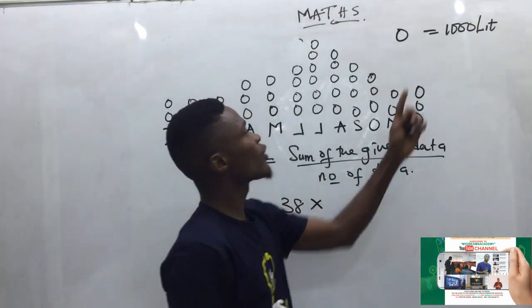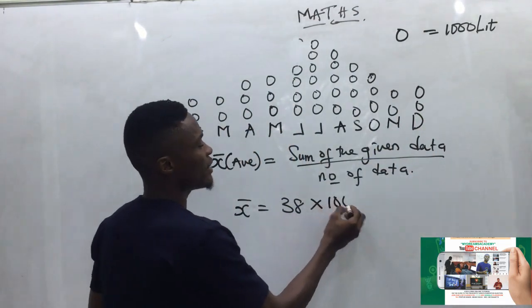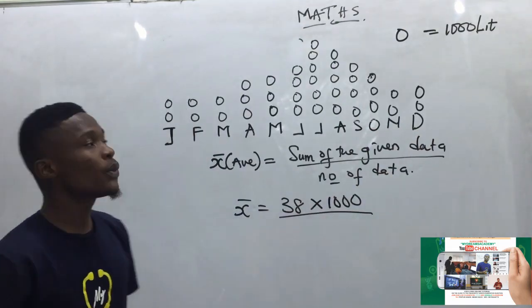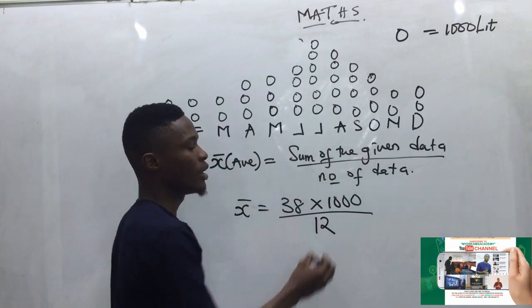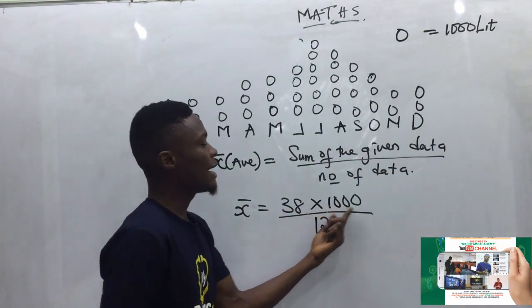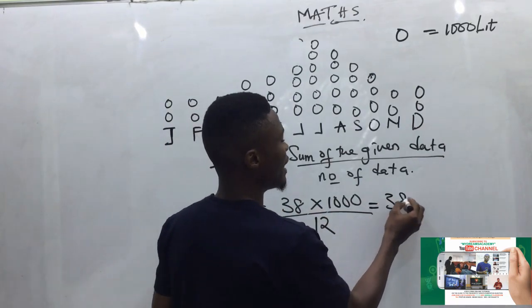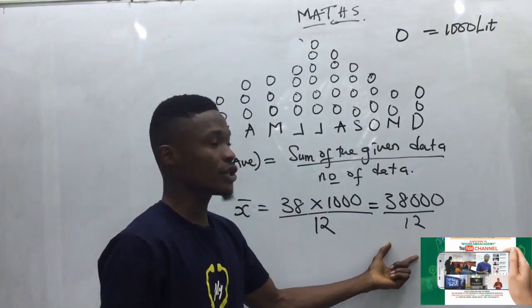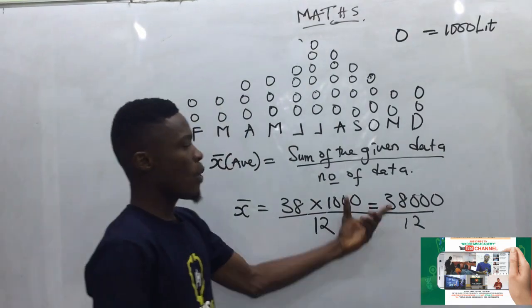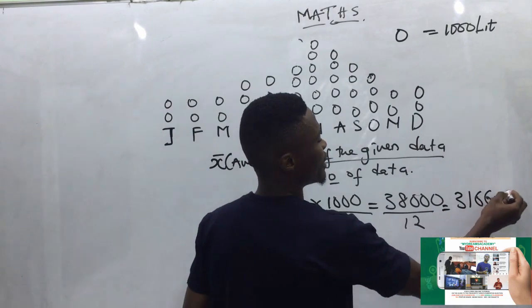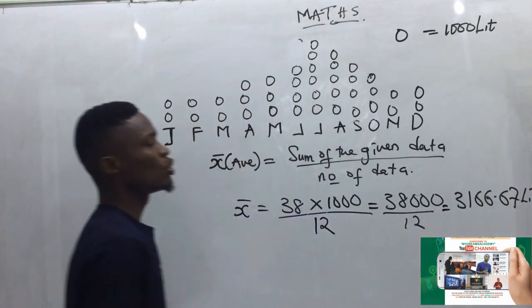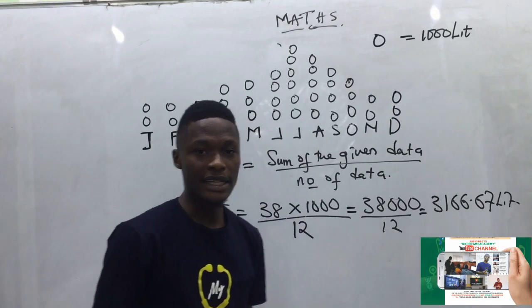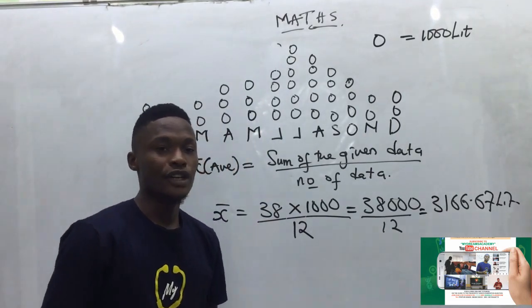So my average becomes: 38 circles × 1,000 liters per circle = 38,000 liters, divided by 12 months. When we divide this using a calculator, we get 3,166.67 liters. So the average volume of water consumed by the family is 3,166.67 liters, which is option B.